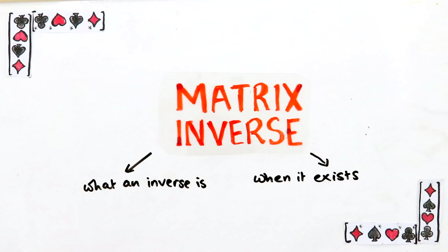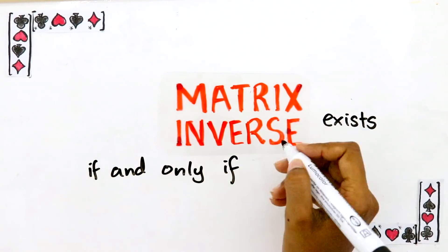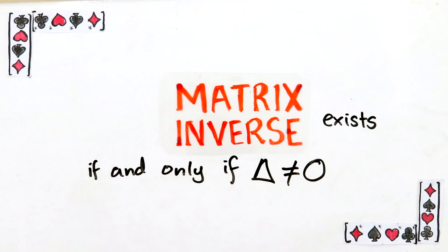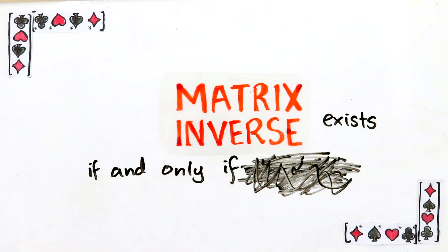You've probably been taught that the inverse exists if and only if the determinant isn't zero, but most students have no idea what the determinant has to do with anything, let alone inverses. I'm going to teach you a completely different condition for when the inverse exists that I think is much more intuitive.